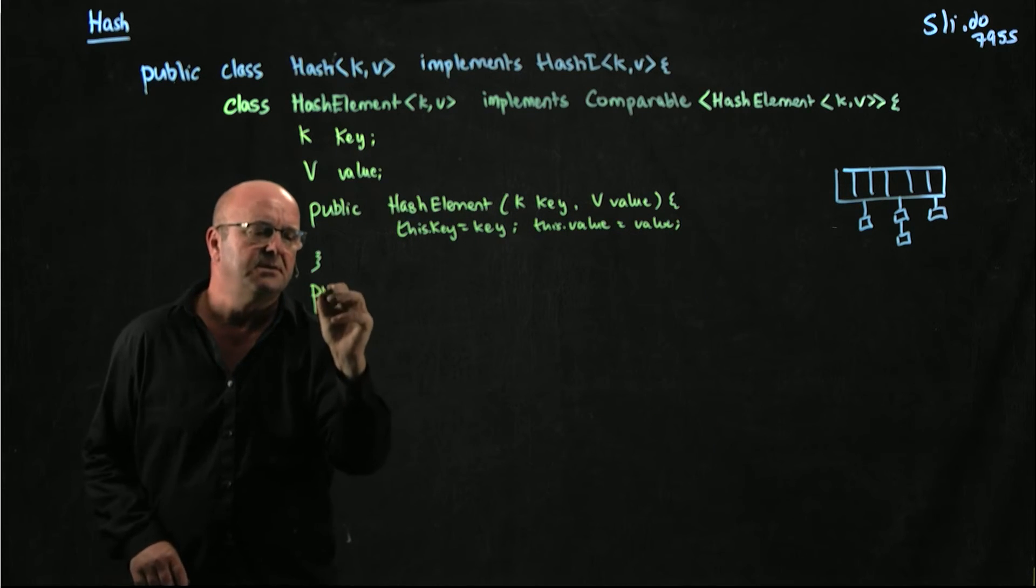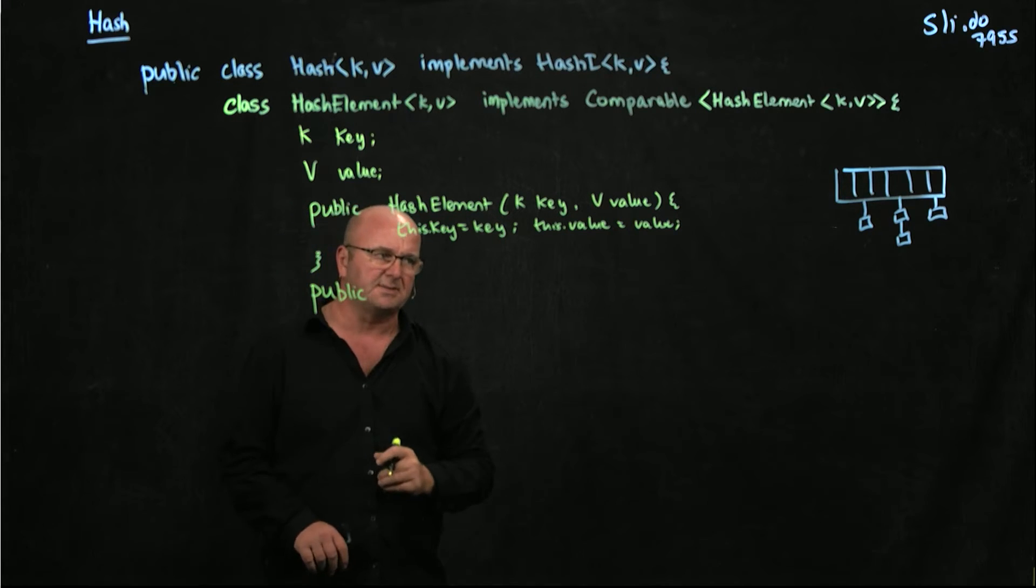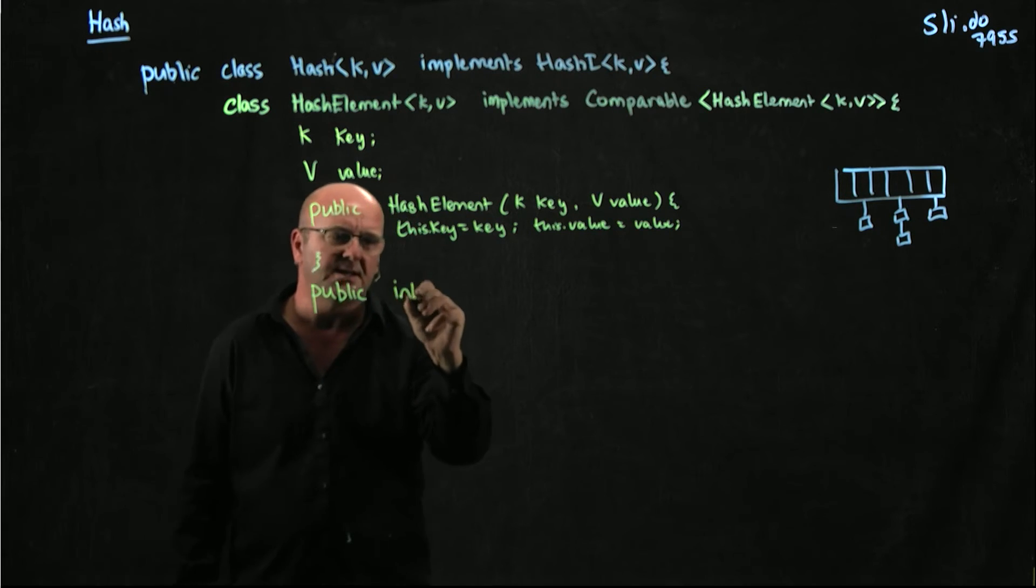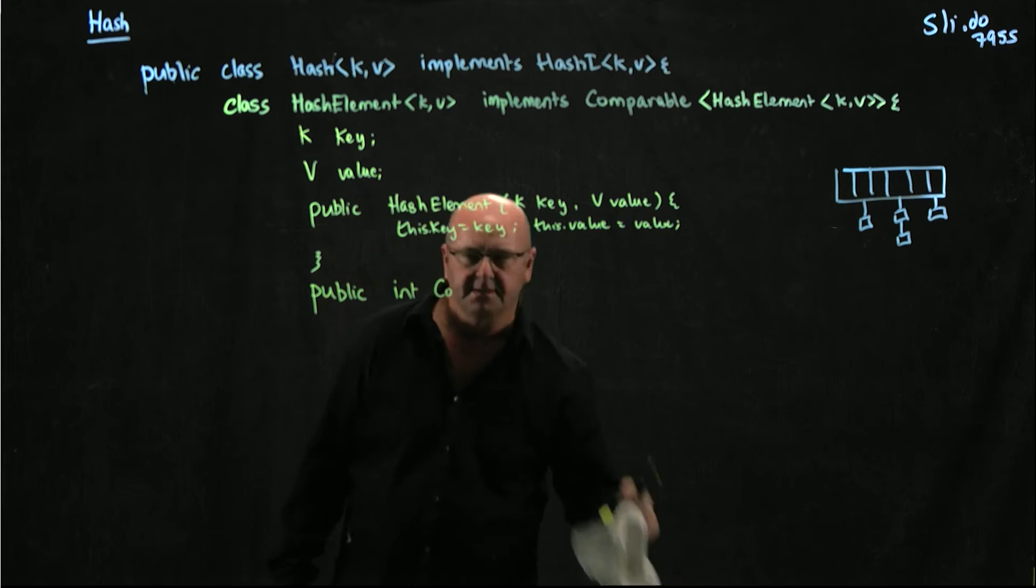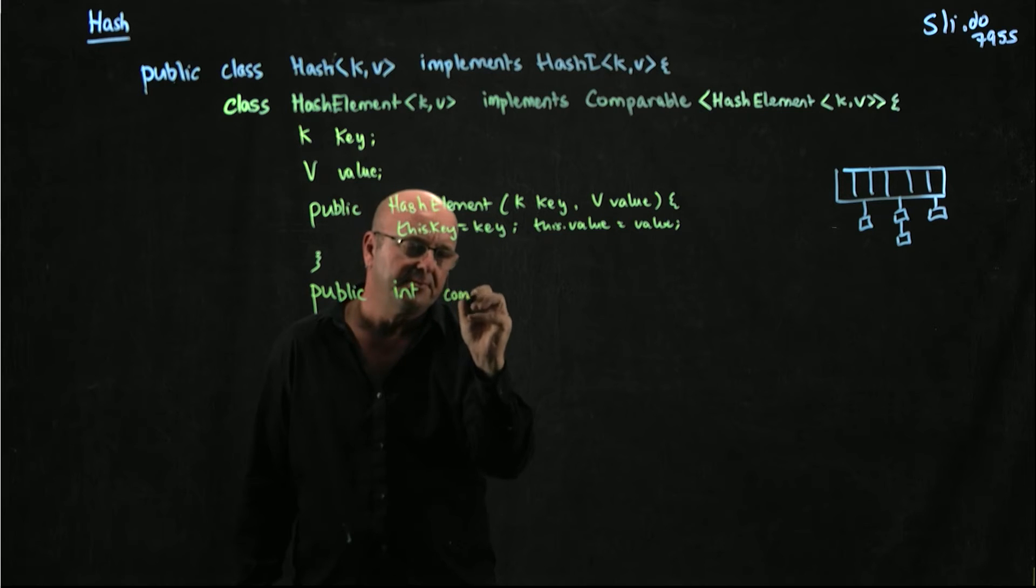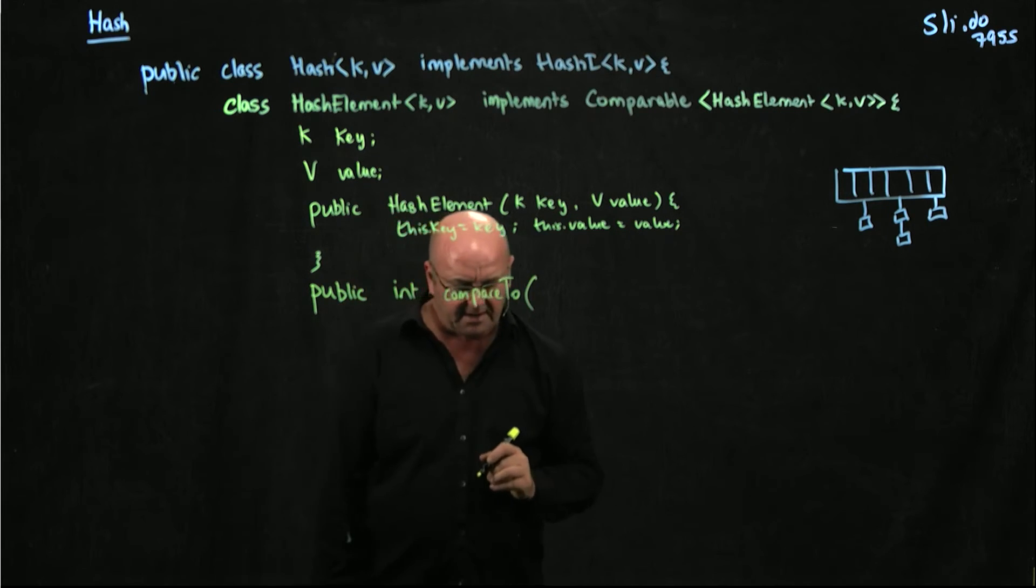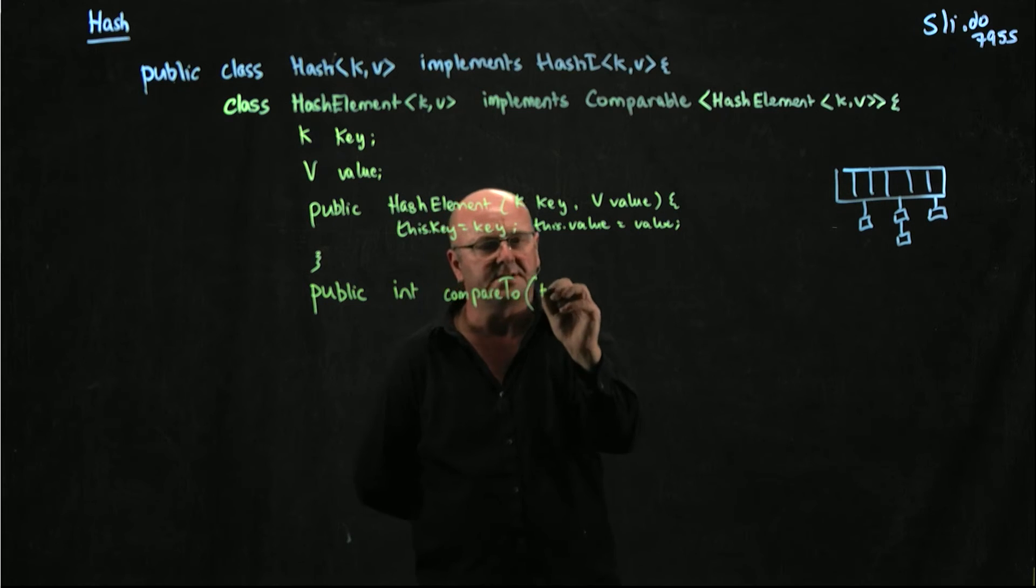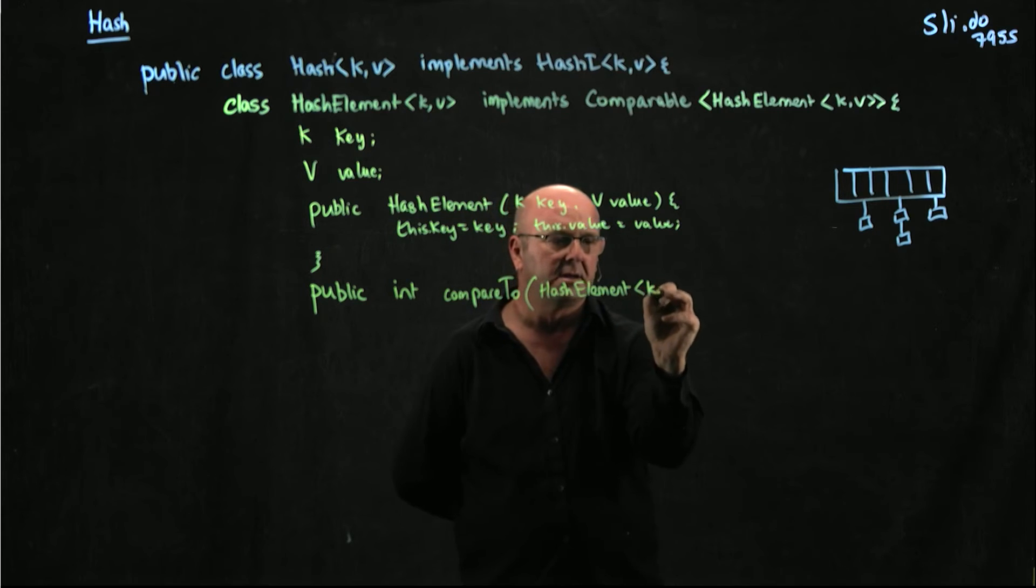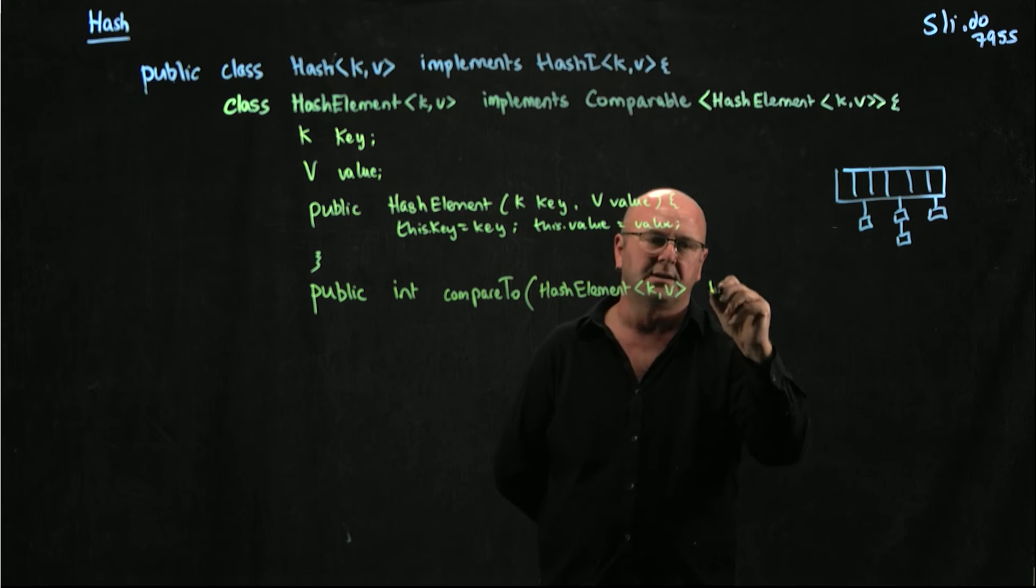So our Comparable, if we're implementing the Comparable interface, we only have to provide one method. And that is public int compareTo. And we're going to compare to a HashElement K V, because that's the only thing we know how to compare to. So let's call that H.